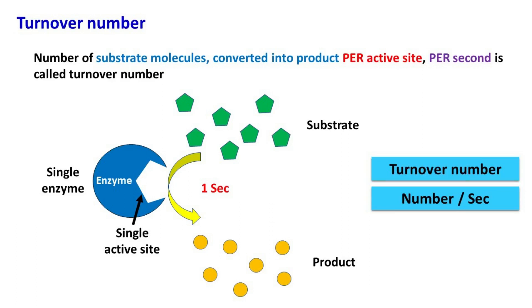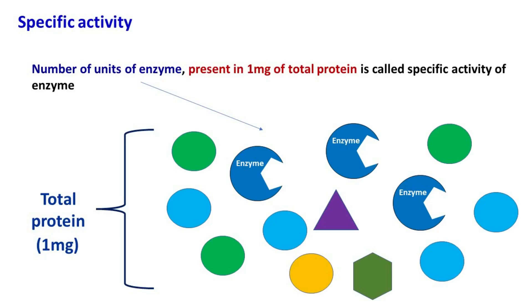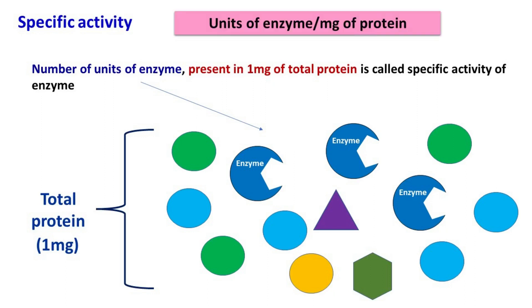Next is specific activity. It is defined as the number of units of enzyme present in 1 milligram of total protein. Hence, the unit of specific activity will be units of enzyme per milligram of protein.